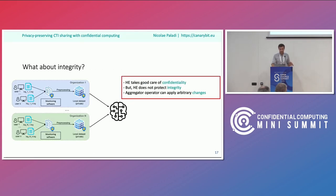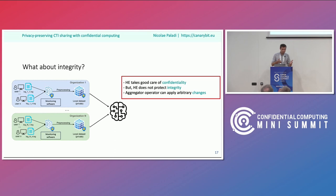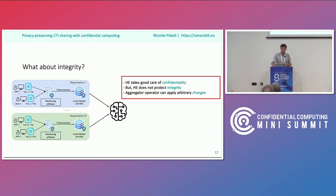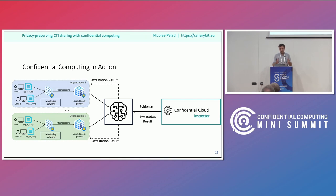Homomorphic encryption has one massive Achilles heel: it only provides confidentiality. Everything is encrypted, but integrity is not covered. We need integrity too — we want to rely on this information and know it's trustworthy. Organizations might trust each other to provide correct information, but will they trust whoever runs the aggregator? This is exactly where confidential computing can help — stacking the technologies by using confidential computing to protect the aggregation service for the federated learning model, combined with homomorphic encryption for secure aggregation of the model parameters.